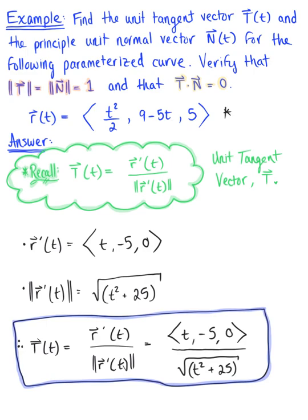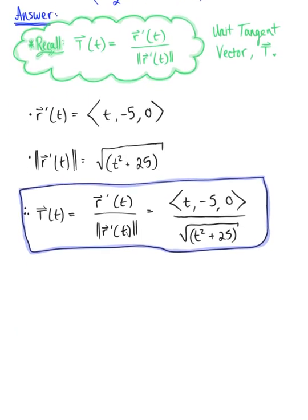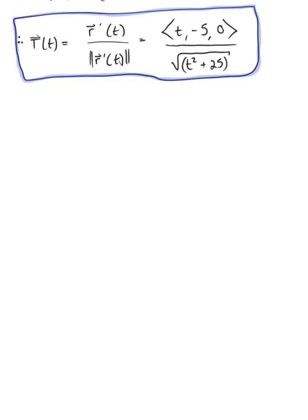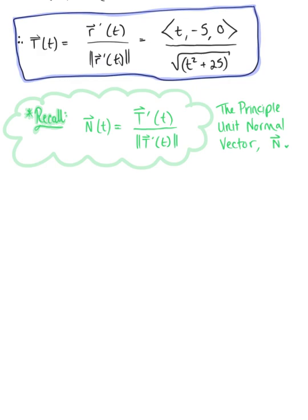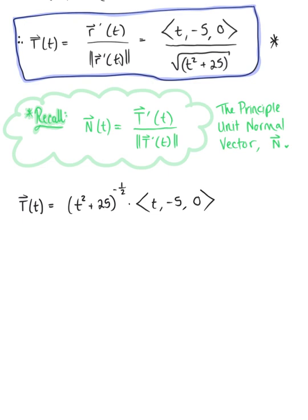Now that we have our unit tangent vector, we're ready to find the principal unit normal vector. The principal unit normal vector is defined as the derivative of the unit tangent vector divided by its magnitude. Looking back at the unit tangent vector, let's rewrite it so we can use the product rule when differentiating — as the real-valued function (t² + 25)^(−1/2) multiplied by the vector (t, -5, 0).